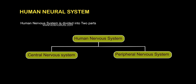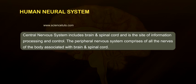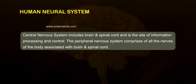Central Nervous System includes brain and spinal cord and is the site of information processing and control.